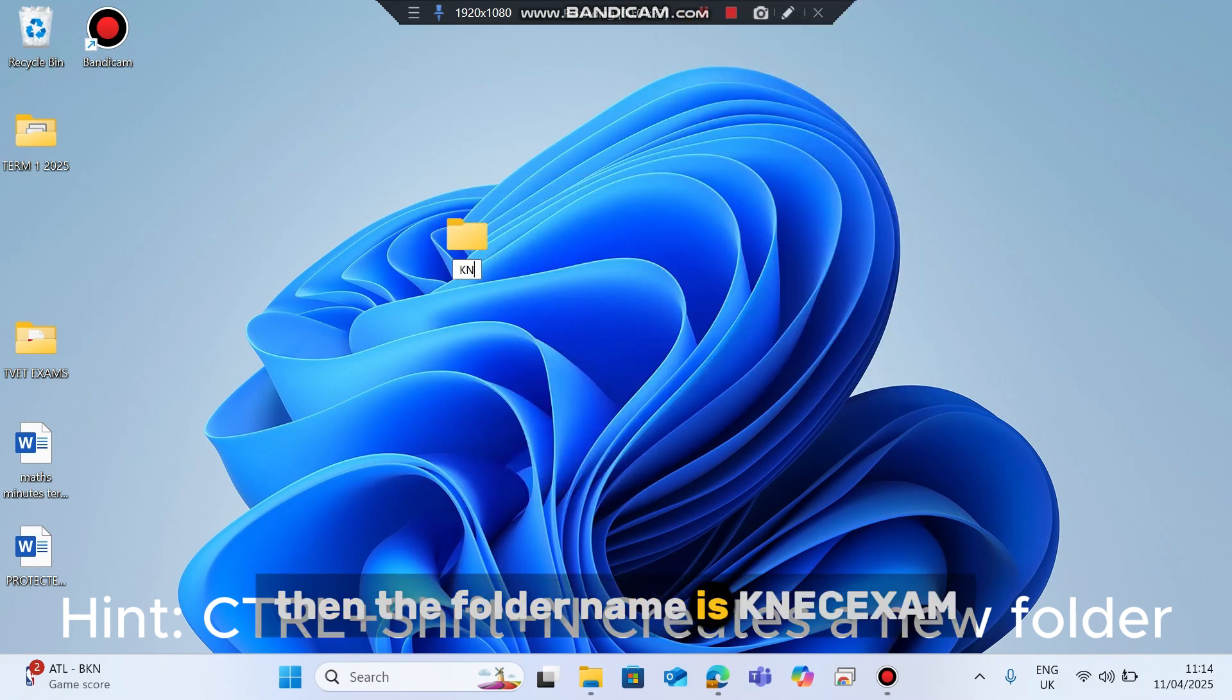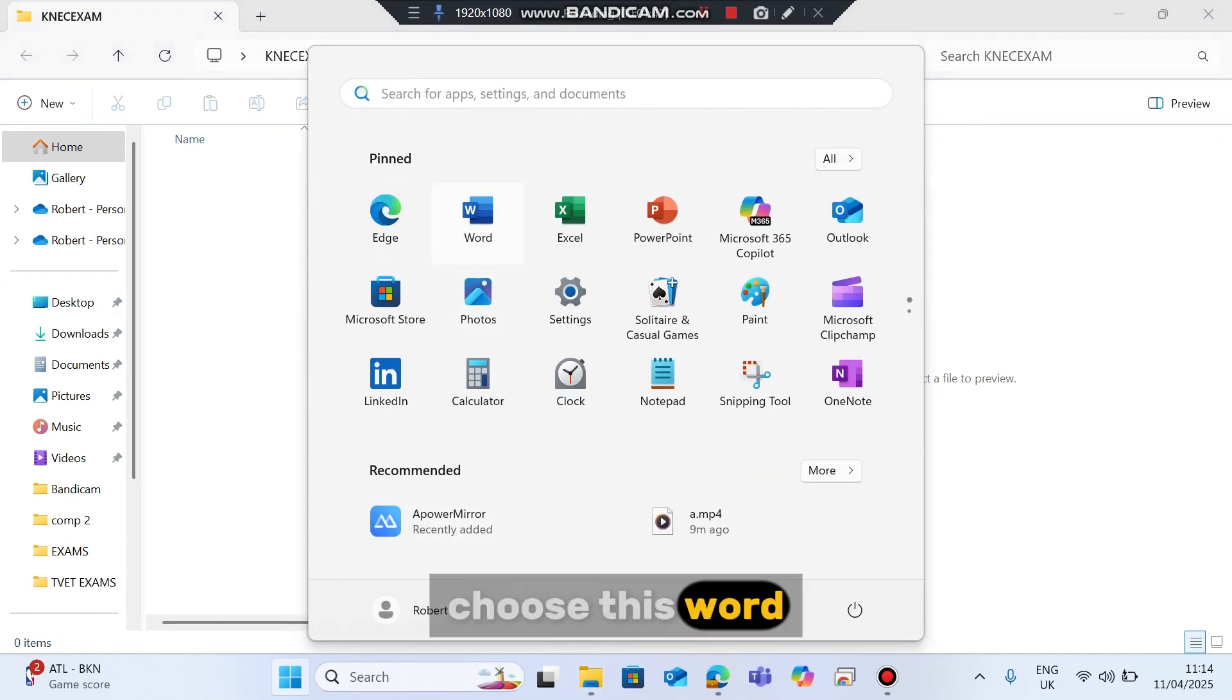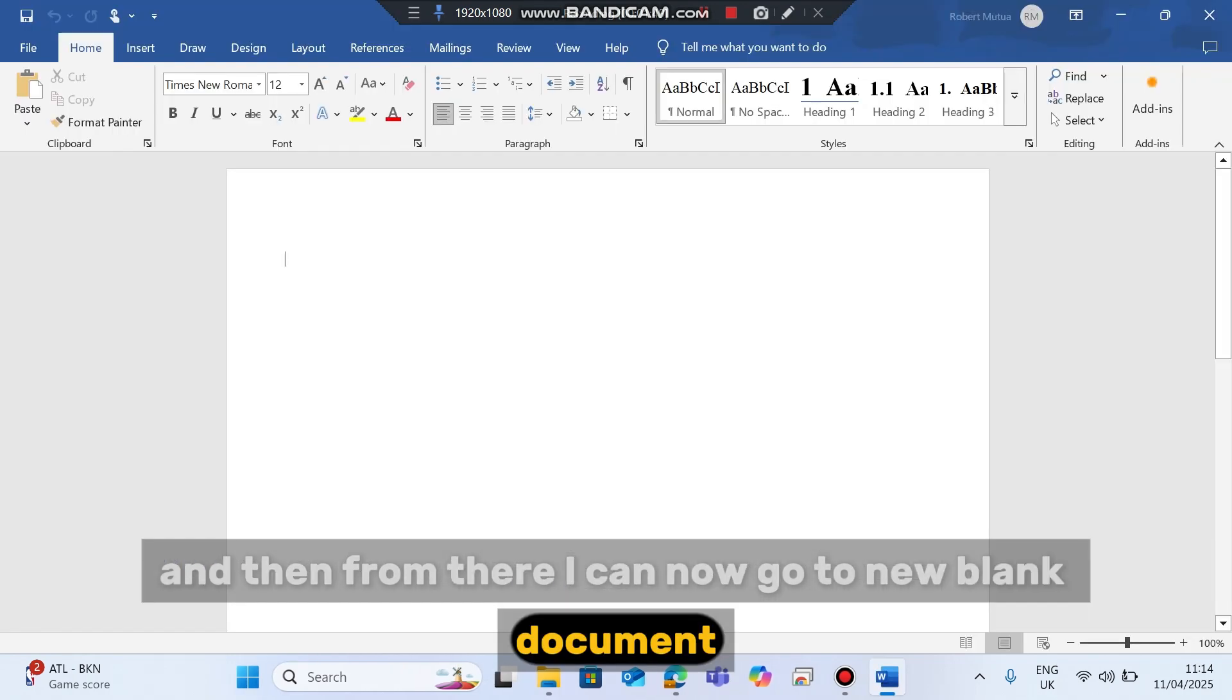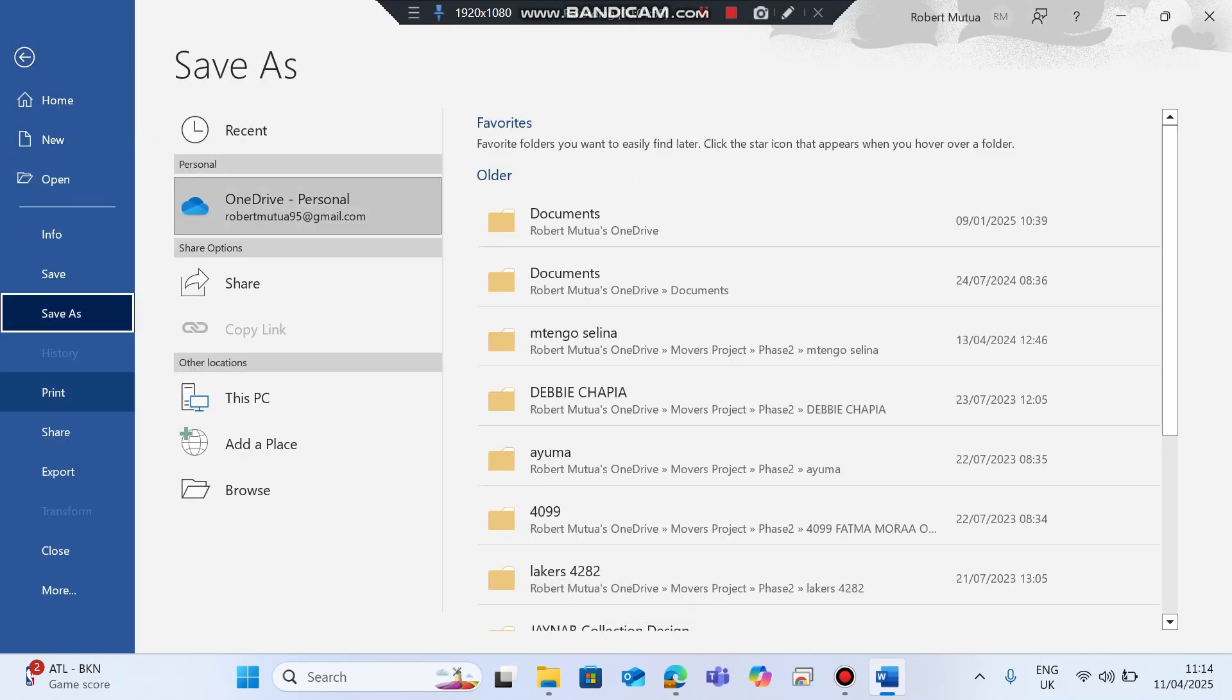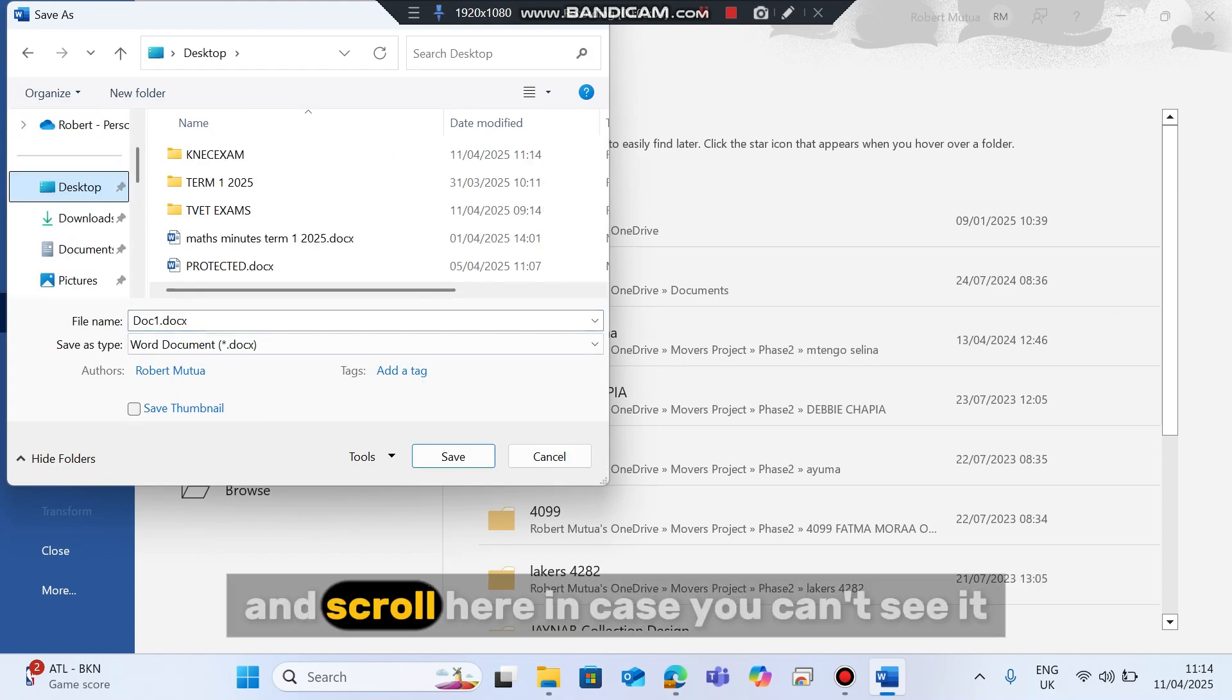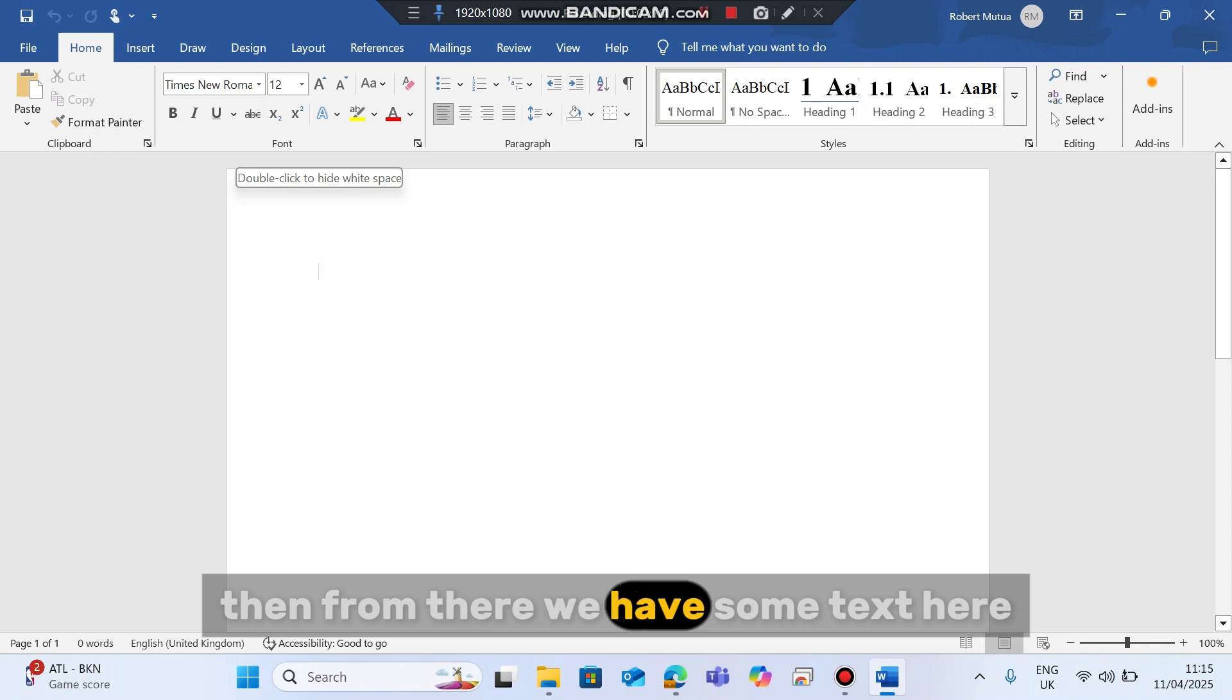The folder name is knec exam. Opening the folder, here it is, it's blank. I can go to start menu, choose Word, and then from there I can now go to new blank document. By default, the name is just Microsoft Word document. So go to file, save as, browse the location and search for desktop. Here it is, scroll here in case you can't see it, and then locate your folder, double click it to open it, and then type the new name which is cleanliness.